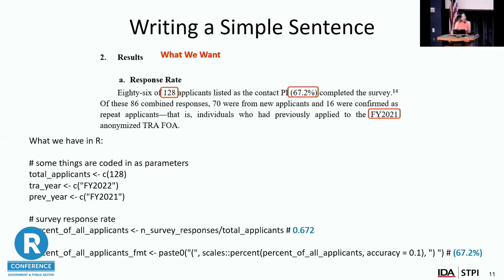Not everything is calculated — some things we need to hard code because those are just the parameters for those years. In this instance, we have a total of 128 applicants, which was given to us by the sponsors — we're hard coding that as the total number of applicants. We also have to update the years of the reports, using FY22 and referring to FY2021 as the previous year. For the percent of respondents, we do our normal calculations in R — number of survey responses over total applicants — get something like 0.672, and then use paste to format it: put in parentheses, simplify to one decimal place, and add the percentage sign.